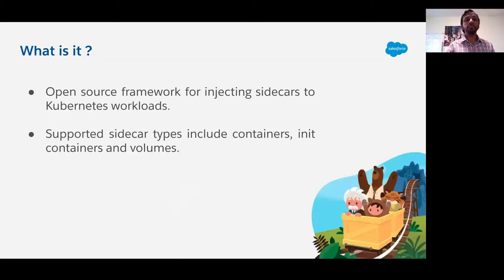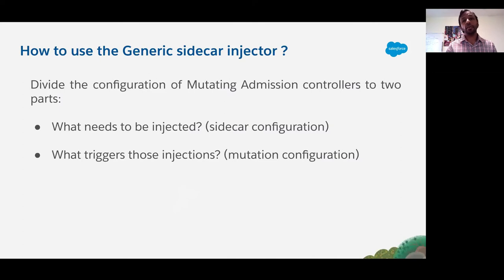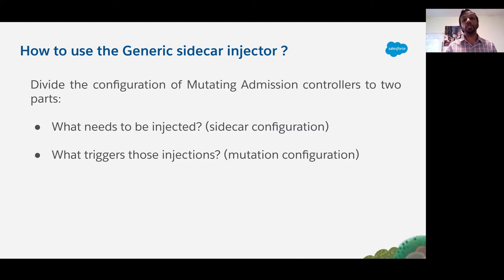At a high level, the generic sidecar injector is a mutating admission controller that allows injection of additional containers, init containers, or volumes at the time of pod creation. The generic sidecar injector uses generic configuration that consists of two parts: what needs to be injected — sidecar configurations — and what triggers those injections — mutation configurations. Separating out these configurations allows teams to specify multiple sidecars and multiple mutations and independently choose which mutation injects which sidecars.